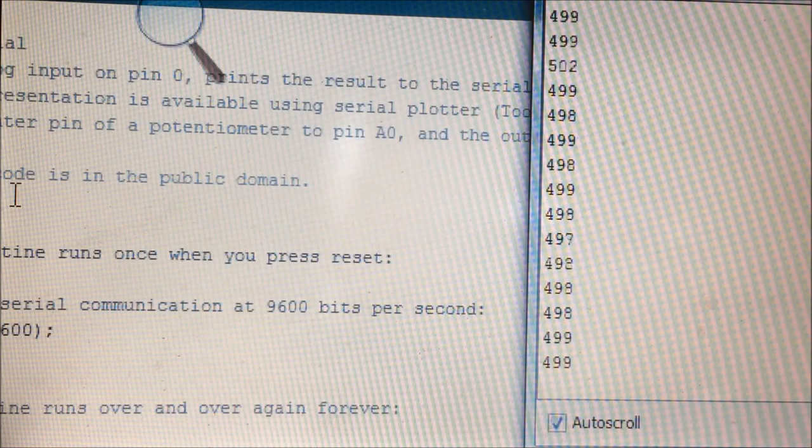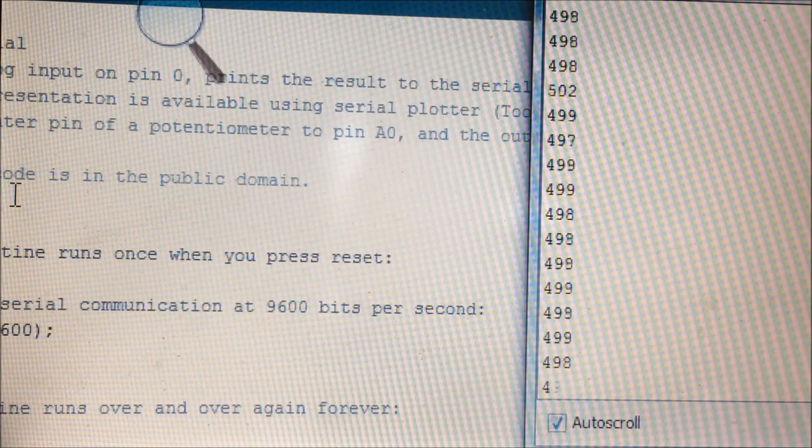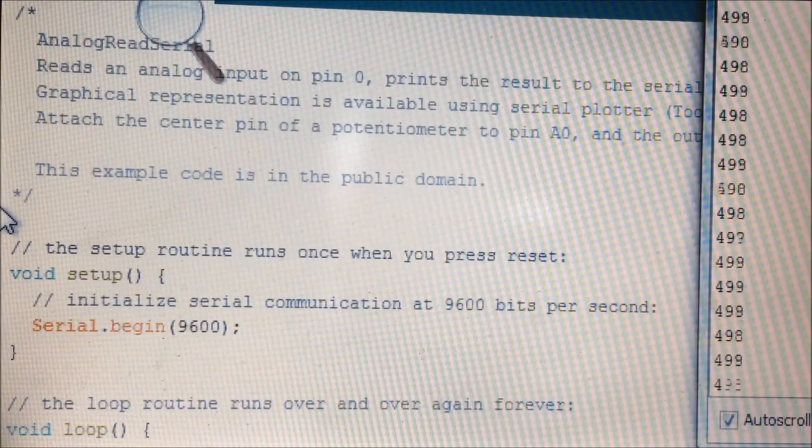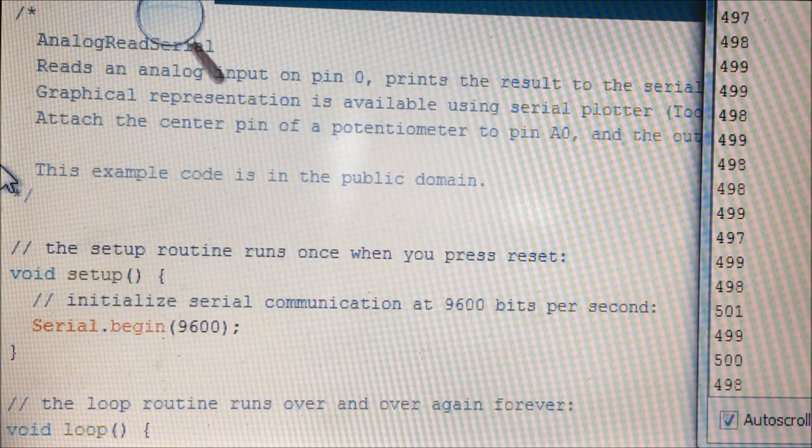So based on this value, you can write the functionality as you want. You can say that if the output value is around 490, then don't do anything. If the output value is greater than 900, move your RC robot to your right. And if the value is less than 100, move it to your left. So this is how you basically use a joystick and control your RC. And I hope the tutorial was clear and the understanding is clear.